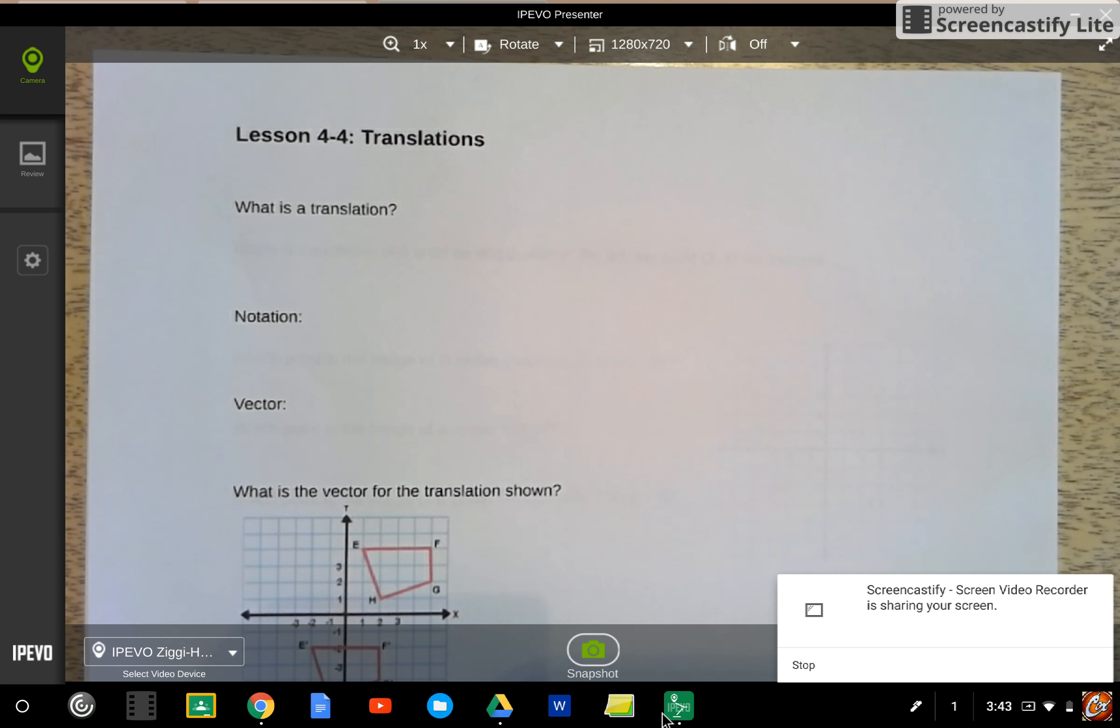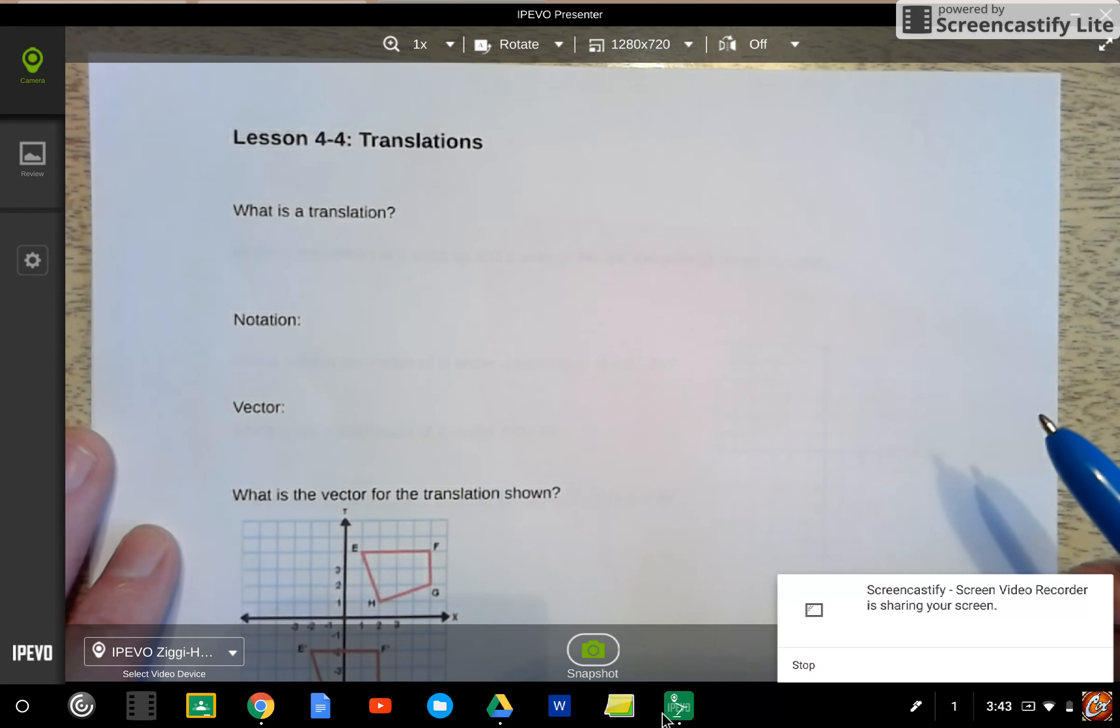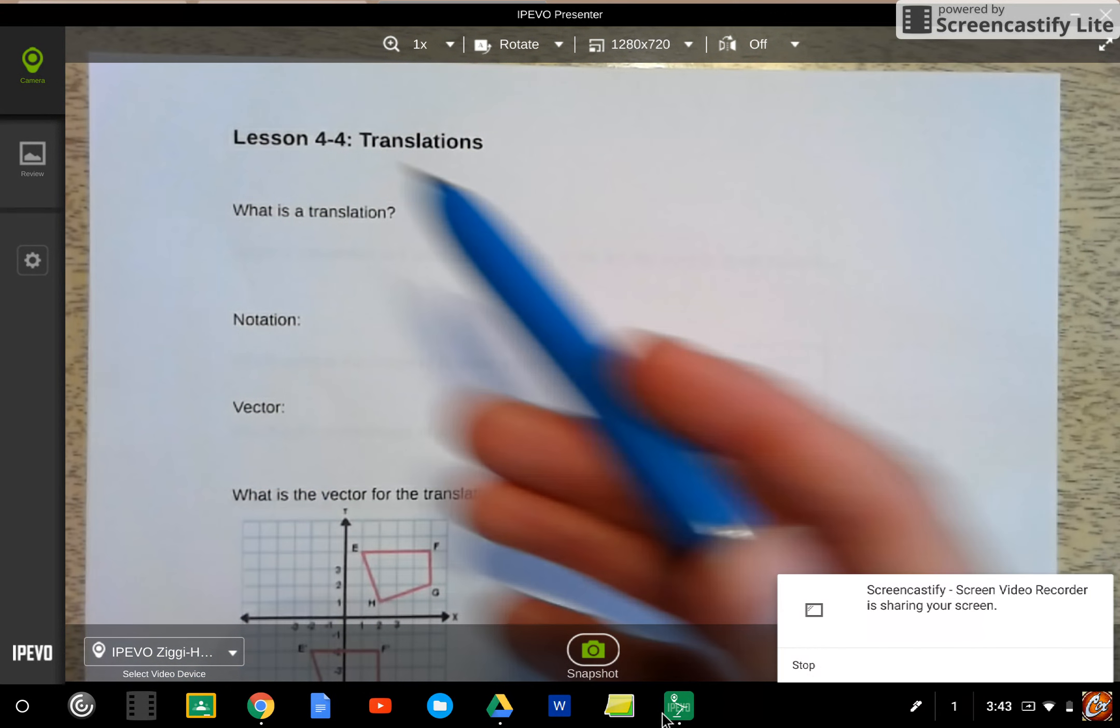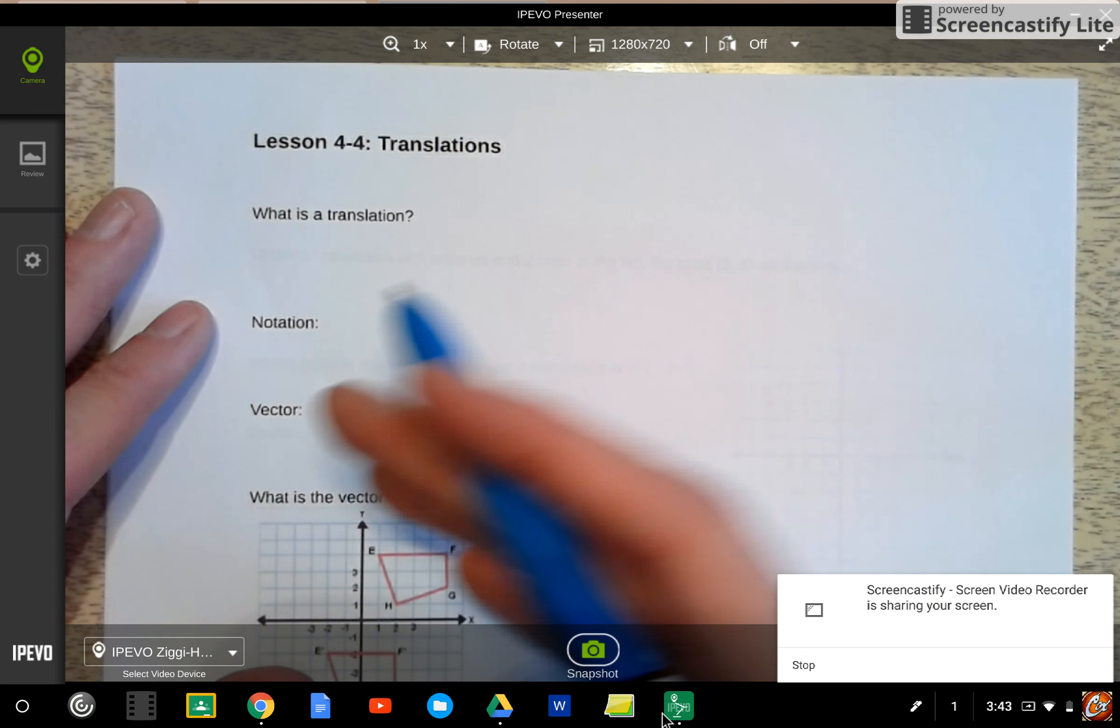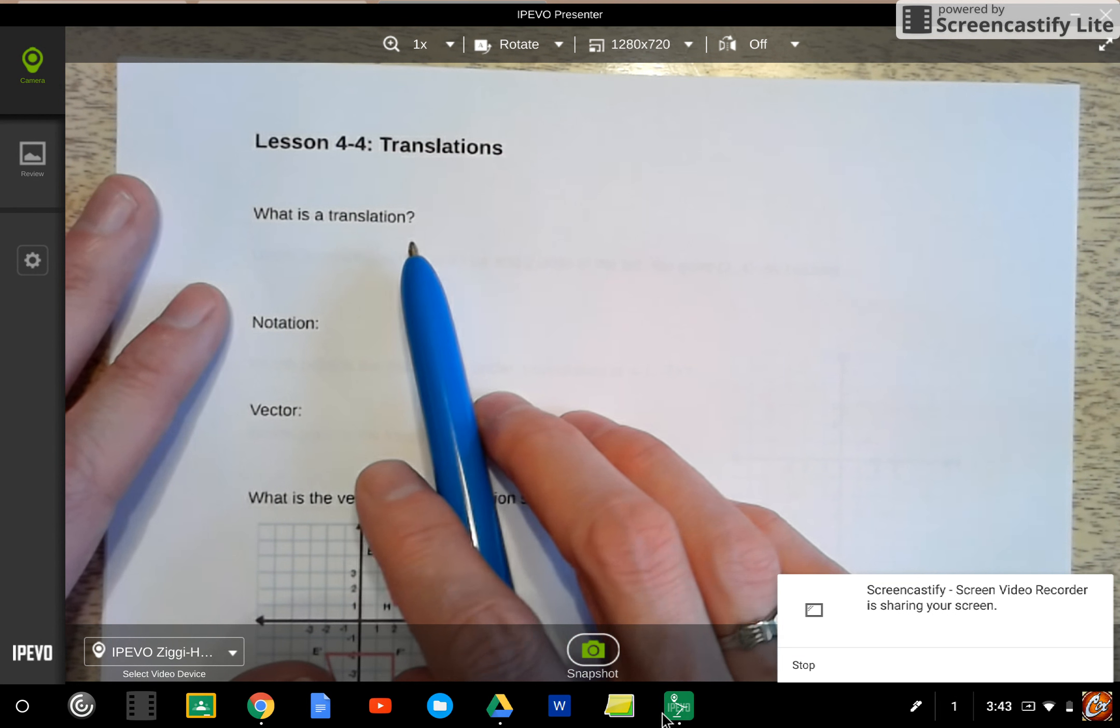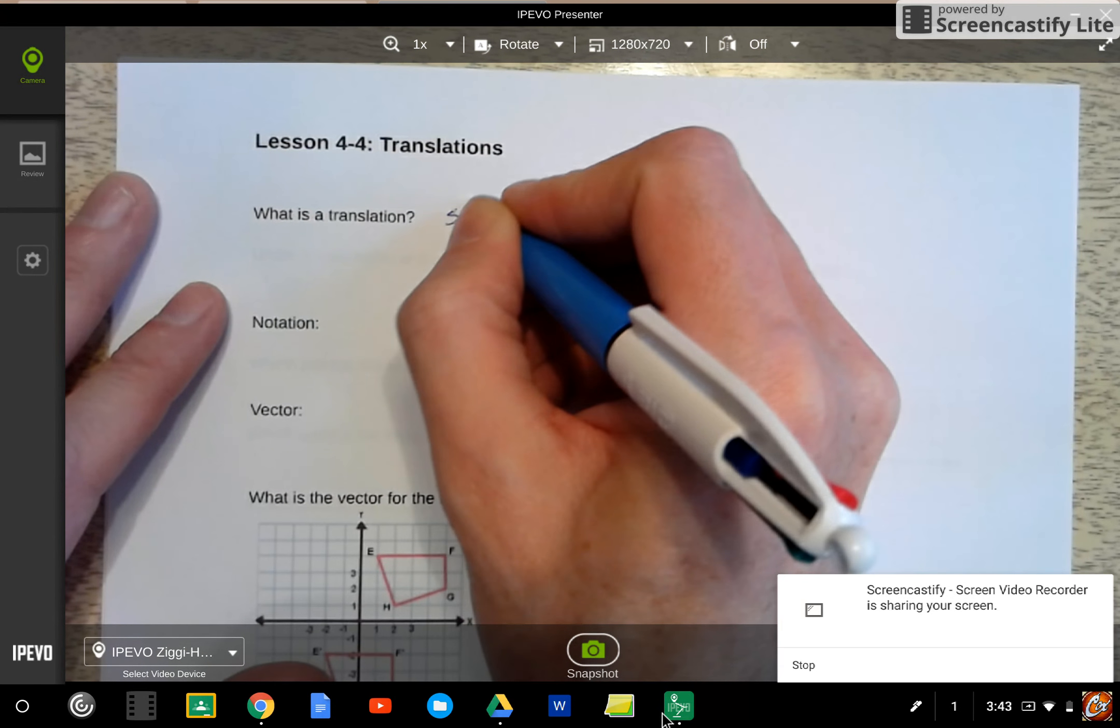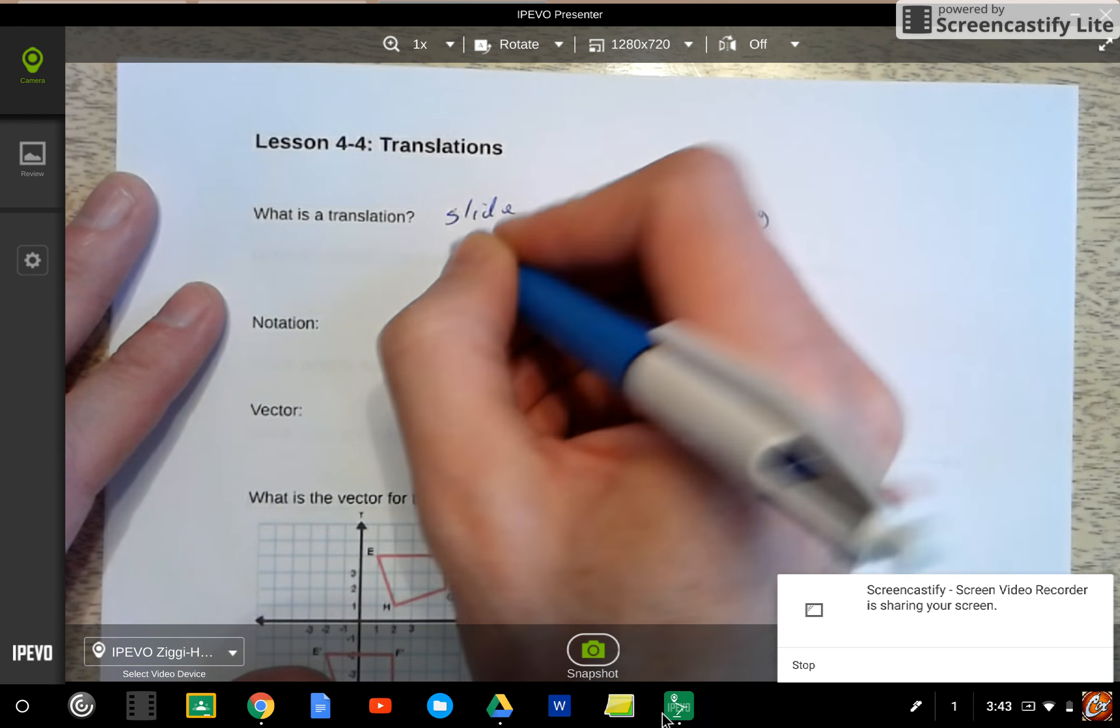So the third type of transformation we're going to talk about is translations. And this is a term you've already used before because you've translated things in your foreign languages. You've gone from Spanish to English and English back to Spanish or French or whatever language you're studying. You slide between languages. Well, that's kind of what a translation does. In mathematics, a translation just slides an image along a vector.